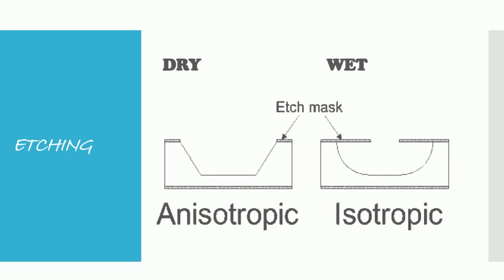The next step is etching. Etching is the process of removing the unwanted materials from the surface of the wafer. Etching can either be dry or wet. The dry etching is called anisotropic while the wet etching is called isotropic. The effect of each variation is better depicted in the picture.